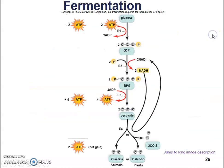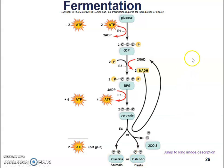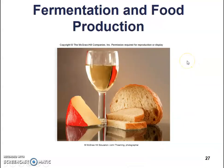Here is a diagram showing fermentation. You'll notice that we start with a glucose molecule, break it down into G3P — the process goes similarly to glycolysis — and we end up with pyruvate molecules. But we don't end up with the same molecules as regular glycolysis. We get two lactate molecules in animals, or two molecules of alcohol in plants.